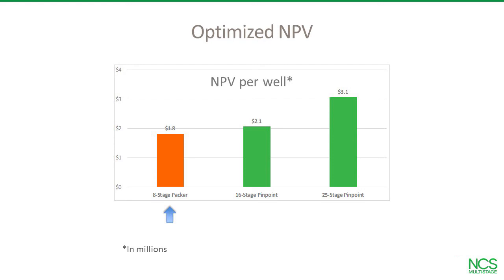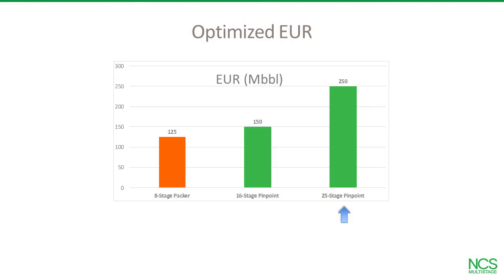Another operator wanted to optimize well economics. They first used an eight-stage completion design with open hole packers and ball drop sleeves, then tested cemented liners combined with multi-stage unlimited pinpoint fracturing. They started with 16 stages per well and got a small increase in net present value. After experimenting with other stage counts, they standardized on 25 stages and raised per-well NPV to more than 1.7 times the initial value. At the same time, EUR improved from 125,000 barrels to 250,000 barrels, leading to a significant increase in booked reserves.